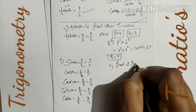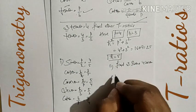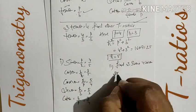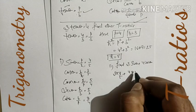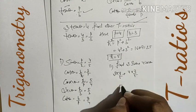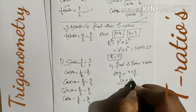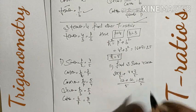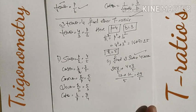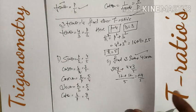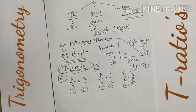Another type of question: find 3 sin θ + 4 cos θ. You just replace the values: sin θ = 4/5 and cos θ = 3/5. So it becomes 3 × (4/5) + 4 × (3/5) = 12/5 + 12/5 = 24/5. Like this, any expression involving T-ratios can be evaluated in examinations.